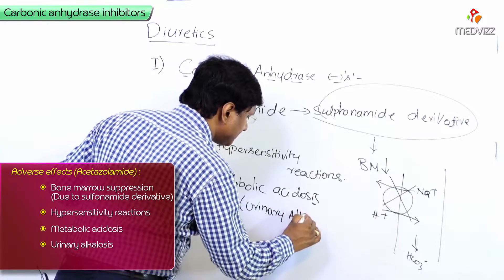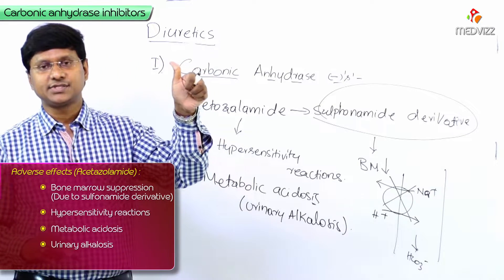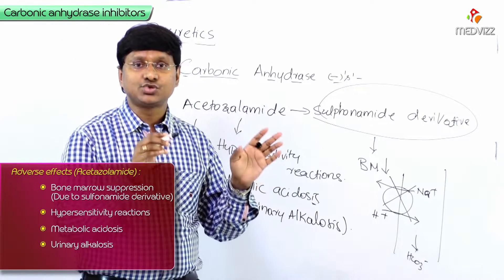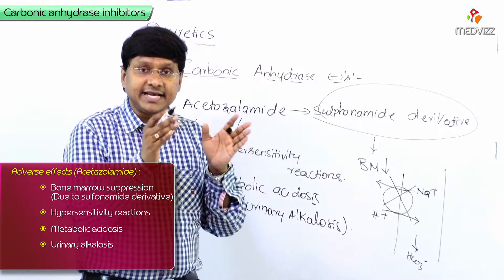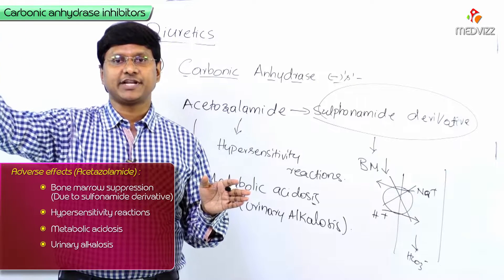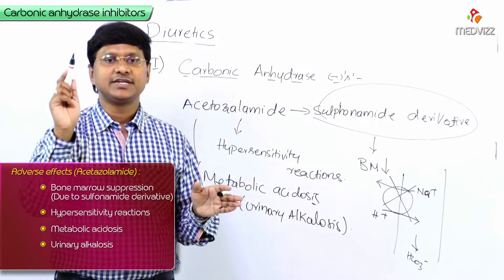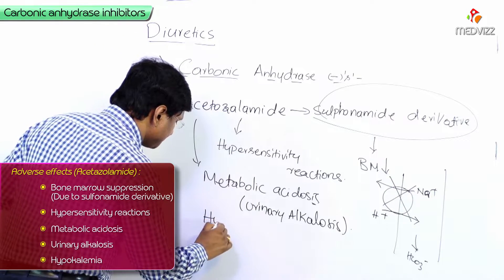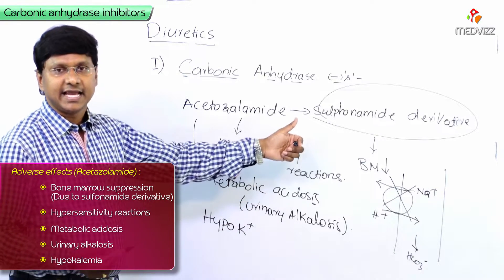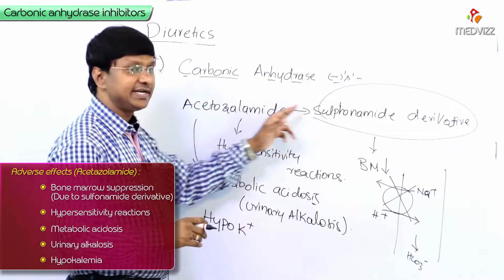Loop diuretics, thiazide diuretics, and carbonic anhydrase inhibitors all inhibit sodium reabsorption, delivering that sodium up to the level of the distal tubules. In the distal tubules, sodium is exchanged with potassium, and the potassium enters the tubule lumen and is excreted in the urine, resulting in hypokalemia.